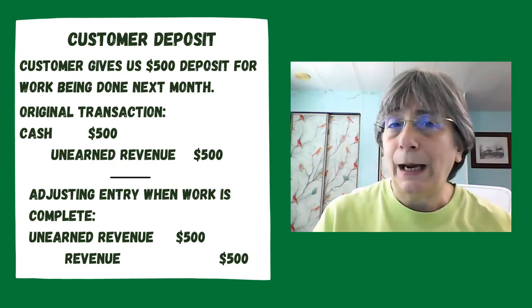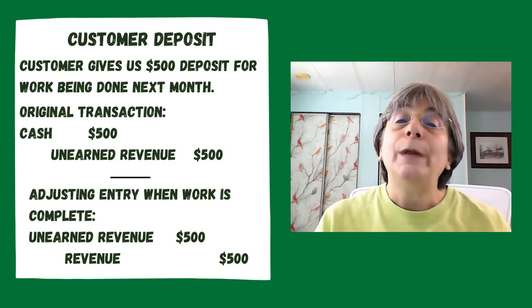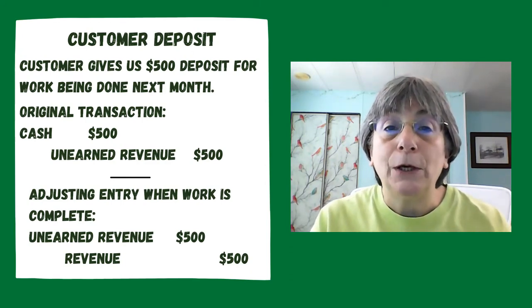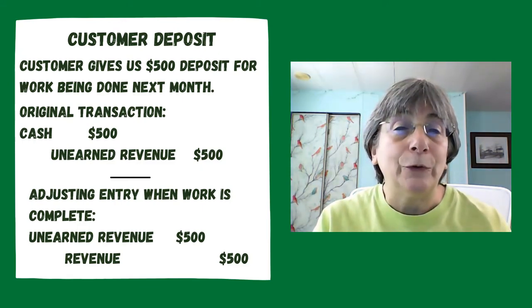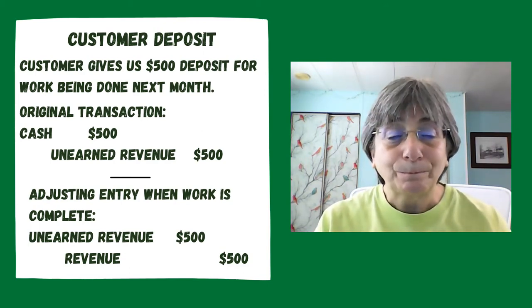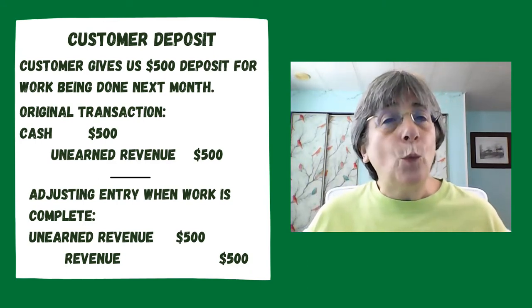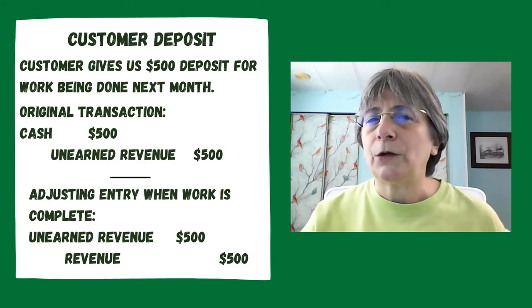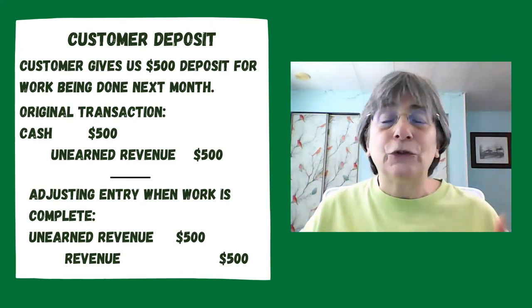Now time has passed, and we have completed the customer's work. What needs to happen is we need to take that unearned revenue liability and get rid of it, because we've completed our transaction for this customer. So we're going to debit unearned revenue to decrease our liability and move it into revenue because we've earned it. We're going to credit our revenue account by $500. When doing adjusting journal entries, it's really important to understand what the original transaction was — as an accounting student you need to think that through yourself.